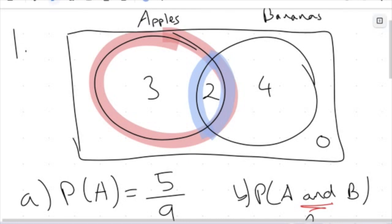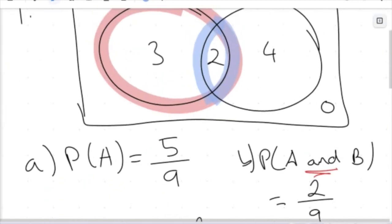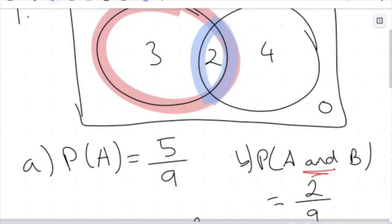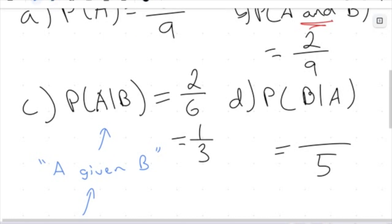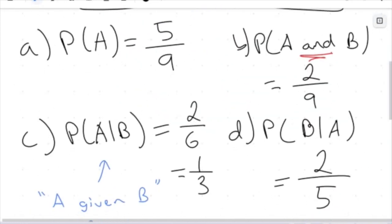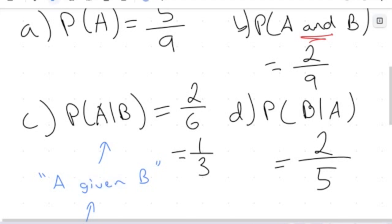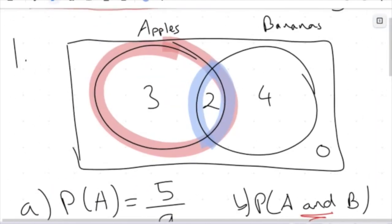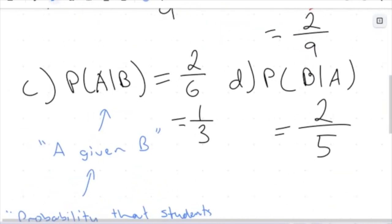Given a student had an apple — so these 5 — how many brought a banana to school as well? Here we are looking at the overlap. Out of the 5 possible students, 2 of those brought bananas as well. So we're always looking at this intersection point of the Venn diagram when we look at conditional probability. I have, as a probability, 2 students out of 5, with 2 being the overlapping section.